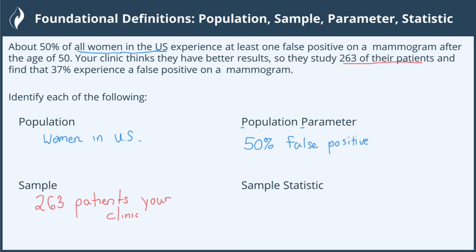Next, we'll turn to the sample. The sample statistic comes from the smaller subset based at the clinic — that had 37% with a false positive. So from that smaller sample, the statistic was 37% received that false positive. Remember: population, entire group, goes with a parameter. Sample, smaller group, goes with a statistic.